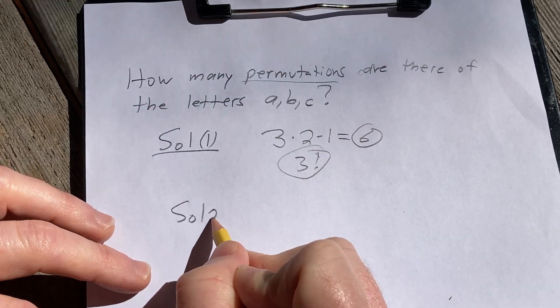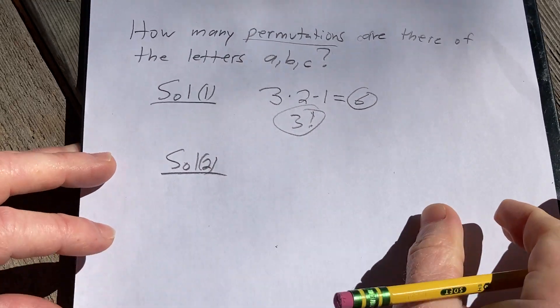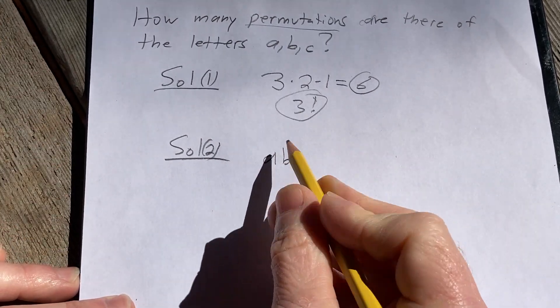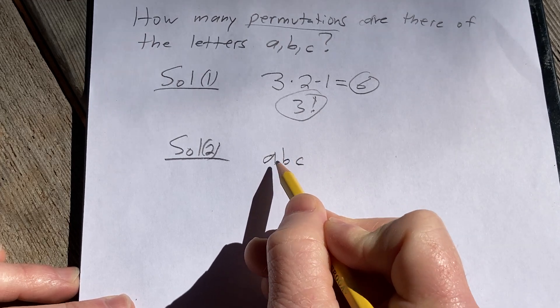Solution 2 is a little more instructive, I think, because we can list all the permutations. Let me show you how to do that. So, A, B, C is one of the permutations, and this permutation starts with the letter A.